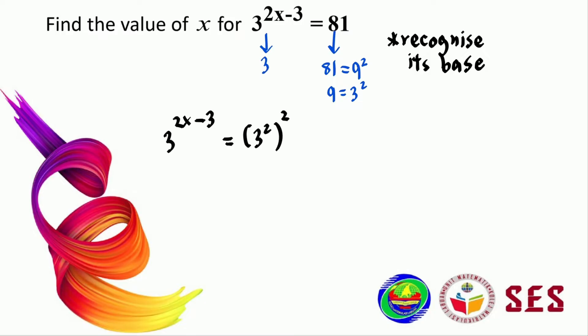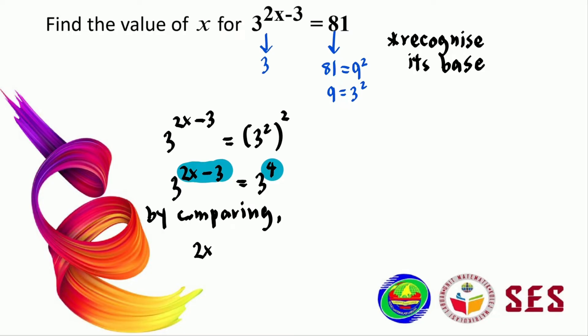Simplifying, we have 3 to the power of 2x minus 3 equals to 3 to the power of 4. Now we know that both sides have the same base, and because each side has only one index with the same base, we can use the first method — comparing powers. So 2x minus 3 equals to 4, which gives 2x equals to 7, and therefore x equals to 7 over 2.